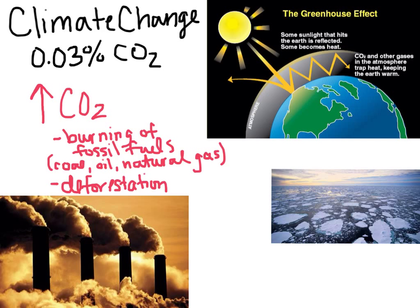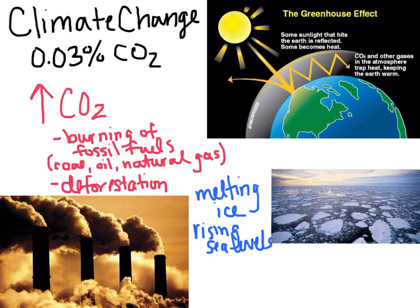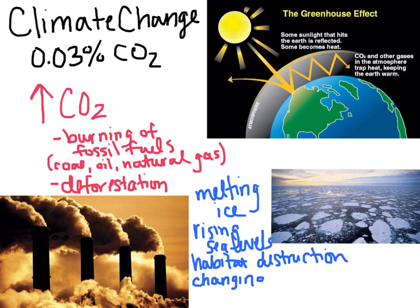Some of the effects of climate change include melting ice — think of all those images of polar bears swimming and drowning — rising sea levels, and habitat destruction. As things start to change, we're seeing increased pollen and allergies, changing weather patterns, and more severe weather. The effects are kind of mind-boggling. So if we can reduce the amount of carbon dioxide that we emit, that's a great first step.